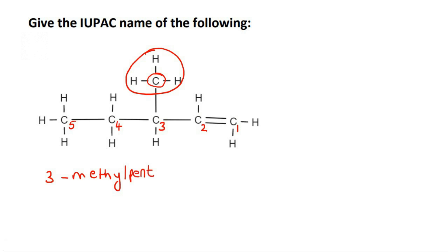Now this is an alkene. So the way that you would end this now is you would say that on carbon number one, there is a double bond like that. So three methyl pent, one ene.